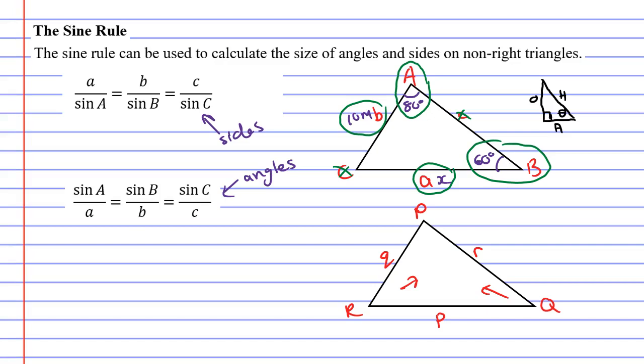So if I was using the sine rule for this particular triangle I would have p over sin capital P equals q over sin capital Q equals r over sin capital R. So we can see that the formula can change, the letters can change, or the fractions can be flipped.